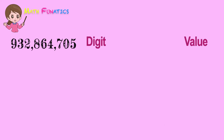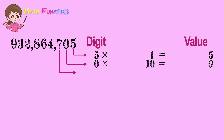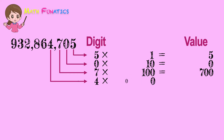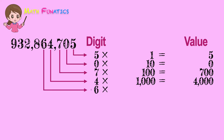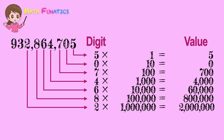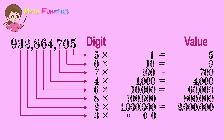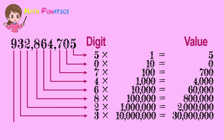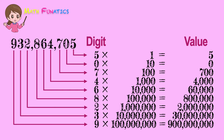Let's try doing this with the digits of this number, starting with the rightmost digit. Digit 5 times 1 is 5. Digit 0 times 10 is 0. Digit 7 times 100 is 700. Digit 4 times 1,000 is 4,000. Digit 6 times 10,000 is 60,000. Digit 8 times 100,000 is 800,000. Digit 2 times 1,000,000 is 2,000,000. Digit 3 times 10,000,000 is 30,000,000. Digit 9 times 100,000,000 is 900,000,000.